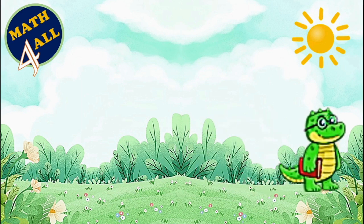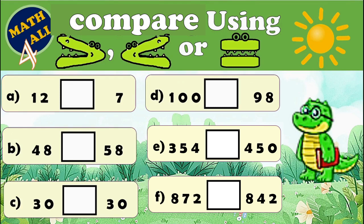Let's practice. Compare using greater than, less than, or equal to. Example A: 12 and 7. As you can see, 12 is a two-digit number but 7 is just a one-digit number. As you know, Number Gator loves big numbers, so Number Gator will open its mouth towards the bigger number and eat 12, because 12 is greater than 7.